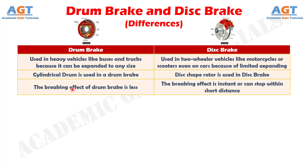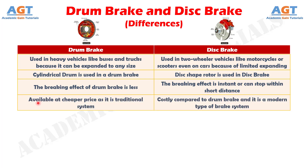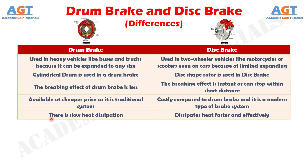Number 3: the braking effect of a drum brake is less, whereas in a disc brake the braking effect is instant and it can stop within a short distance. Number 4: the drum brake is available at a cheaper price as it is a traditional system, whereas the disc brake is costly compared to the drum brake and it is a modern type of brake system. Number 5: when drum brakes come into action there is slow heat dissipation, whereas the disc brake dissipates heat faster and effectively.